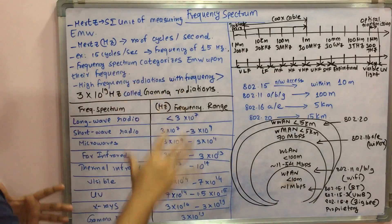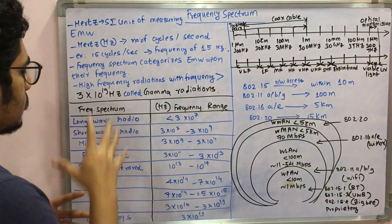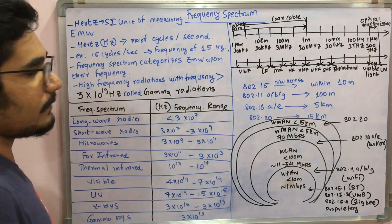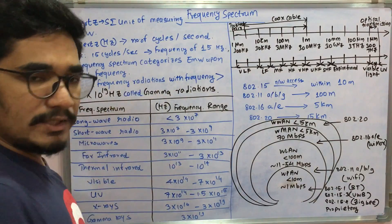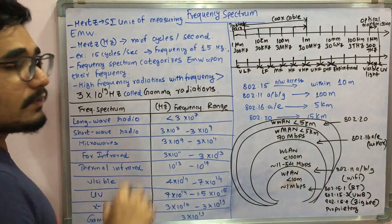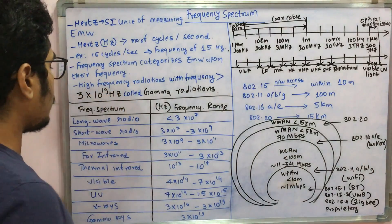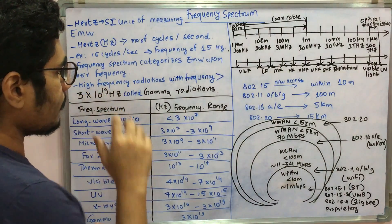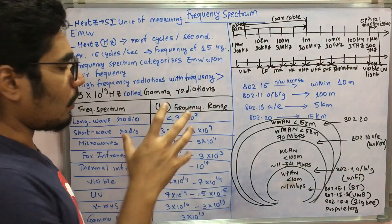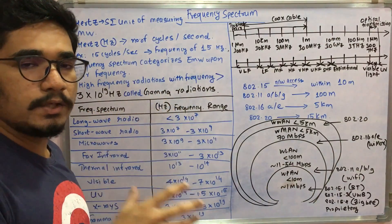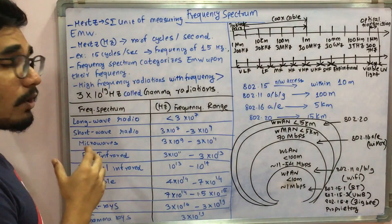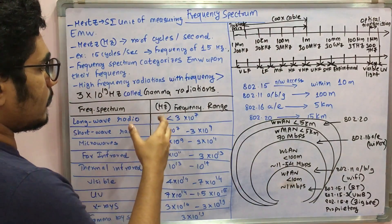We have a table that lists some of the frequency spectrum and the operating frequency ranges. There are nine different entries. The first is long wave radio, which operates at less than 3×10^7 hertz. Then comes short wave radio, which operates in the range of 3×10^7 to 3×10^9 hertz.